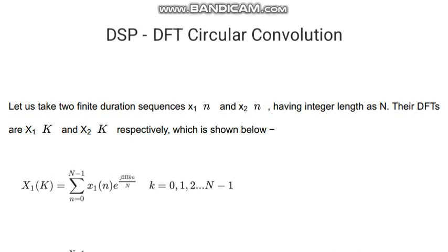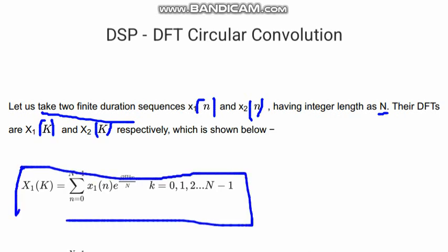So let us take two finite duration sequences x1(n) and x2(n), and they are having integer length as capital N. Their DFTs are X1(K) and X2(K) respectively.